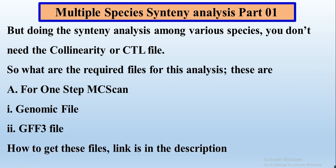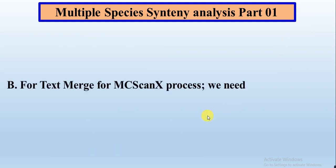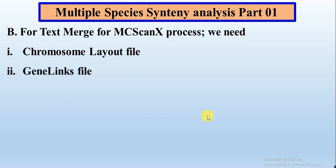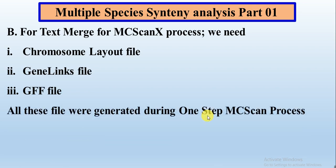How to get these files — the link of that video is present in the description or you can find it from here. In the second step, after completing the one-step MCScan process, we will do the text merge for MCScan process, and for that we need the chromosome layout file, GFF file, and all these files that were generated during the one-step MCScan process.